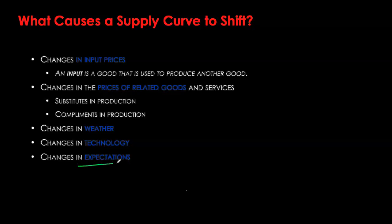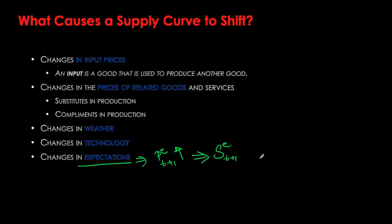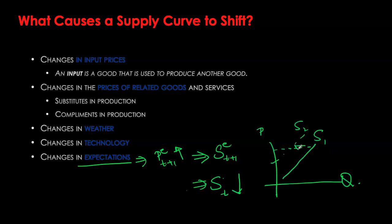Lastly, we have changes in expectations. Expectations about the future can affect supply today. If sellers expect the price of the good they're selling to go up, they would rather sell more in the future to earn higher revenues and profits. As a result, they hold back their resources and don't produce as much today, causing today's supply to decrease. On our diagram, at any given price, quantity supplied is lower than before. Remember, demand and supply curves are always drawn for a particular point in time and location.